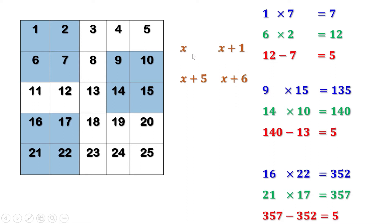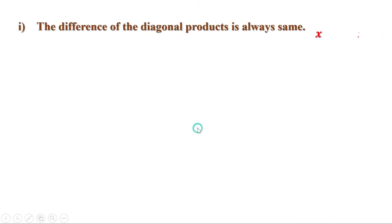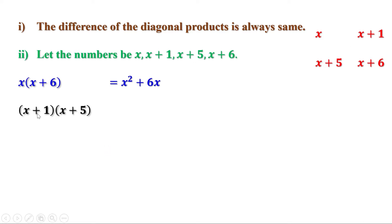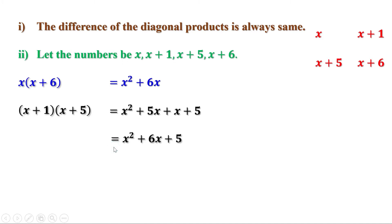So let us take the four numbers as x, x plus 1, x plus 5, and x plus 6. Now let us find the diagonal product x into x plus 6. x into x is x square, x into 6 is 6x. So x into x plus 6 equals x square plus 6x. The second diagonal product x plus 1 into x plus 5: x into x is x square, x into 5 is 5x, 1 into x is x, 1 into 5 is 5. This can be written as x square plus 5x plus x plus 5, which is x square plus 6x plus 5.